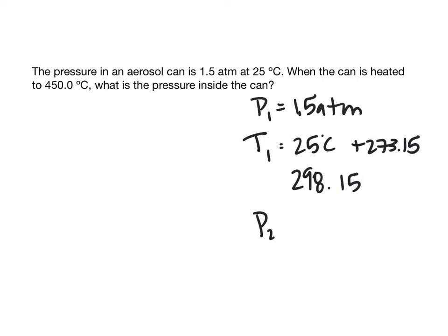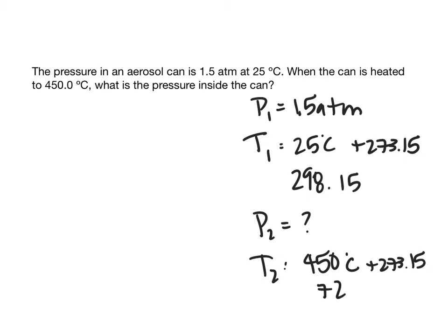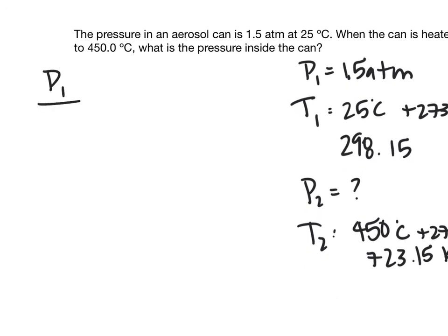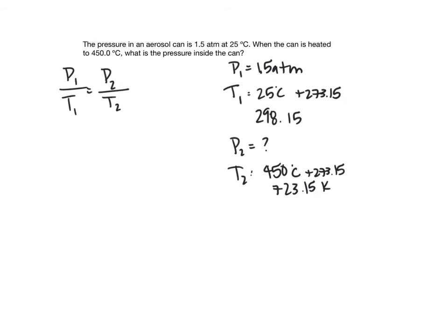P2 is what we're looking for, and T2 is 450 degrees Celsius plus 273.15, which gives us 723.15 Kelvin. We can set this up as P1 over T1 equals P2 over T2.